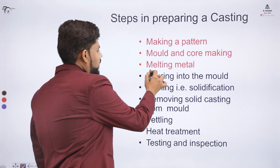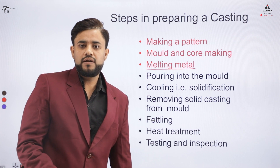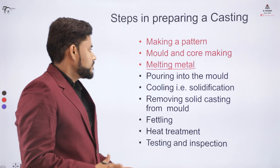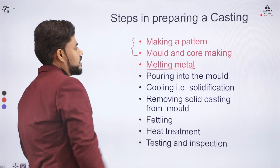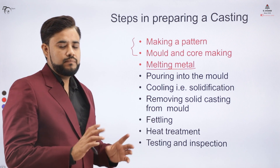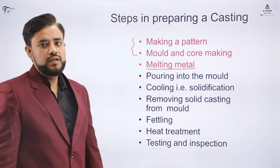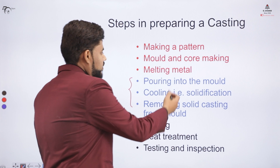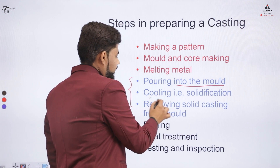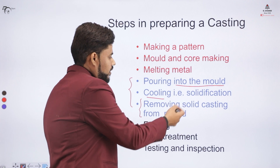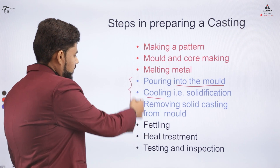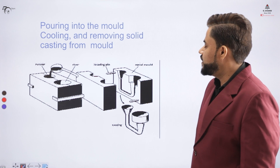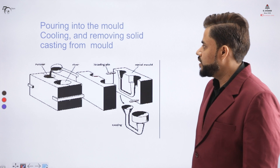In this part of the video, we have covered the melting of the metal, which is a specific requirement in producing the final casted product. Before this, we saw pattern making and mold/core making in the previous videos of the same course. In the later stages, we will cover pouring the molten metal into the mold, waiting for cooling, and removing the solid casting.